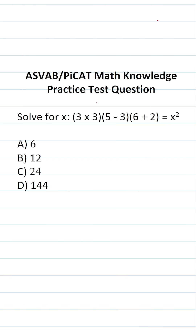This math knowledge practice test question for the ASVAB and PyCat says solve for x. We have 3 times 3 times 5 minus 3, times 6 plus 2 in parentheses, equals x squared.